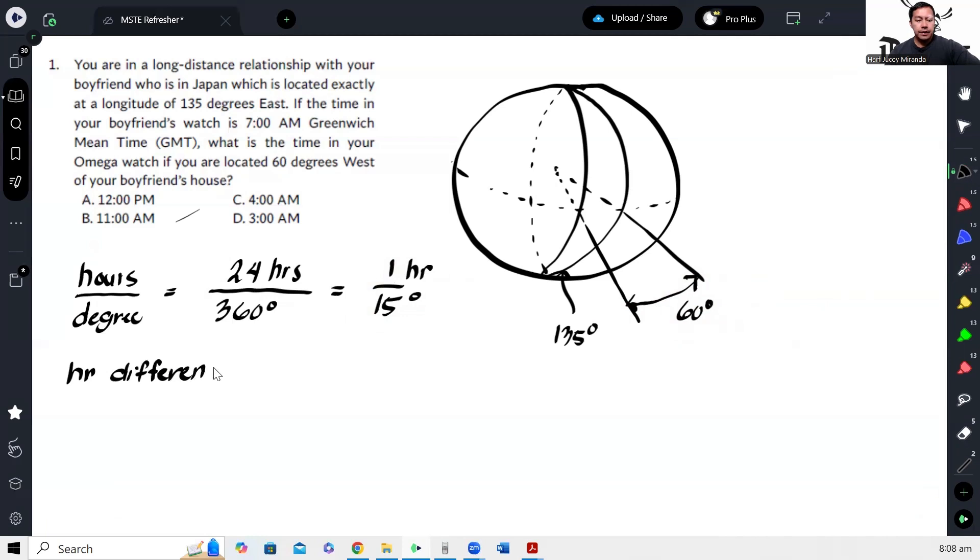Let's call that hour difference. That is 1 hour per 15 degrees multiplied by 60 degrees. Okay, and this gives us 4 hours.